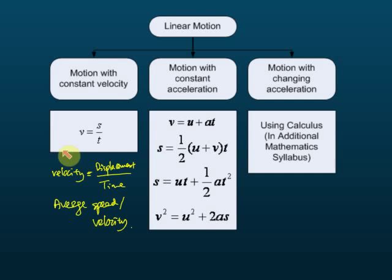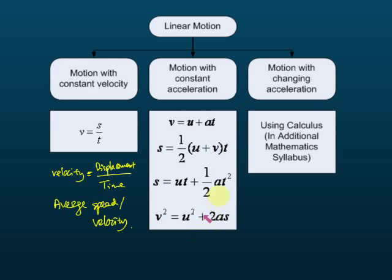That covers motion with constant velocity. The second type is where speed changes — that is acceleration. If the acceleration is constant, that's uniform acceleration. Motion with constant or uniform acceleration can be solved using four formulas. The bad news is you must memorize all four. They are given in the formula list for the exam, except for one of them.